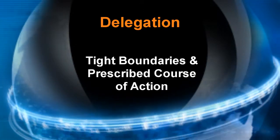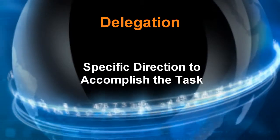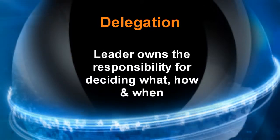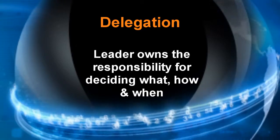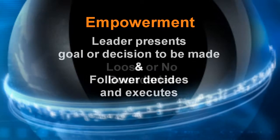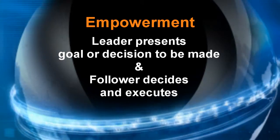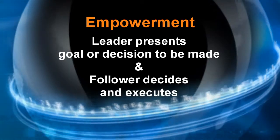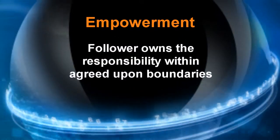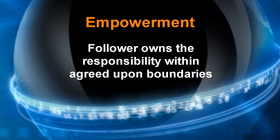Delegation has tight boundaries and often a prescribed course of action. The ultimate delegated task is one where the leader gives specific direction and the follower carries it out as directed. With delegation, you own the responsibility for deciding what, how, and when things are done. Empowerment, on the other hand, has loose or even no boundaries. The ultimate example of empowerment is the leader presenting a goal to be accomplished or a decision to be made, and then allowing the follower to determine and execute the course of action with limited or no further involvement from the leader. With empowerment, the follower owns the responsibility for deciding what, how, and when things are done within the agreed-upon boundaries.